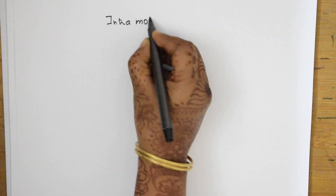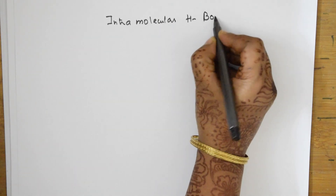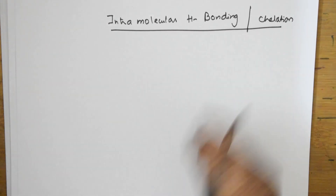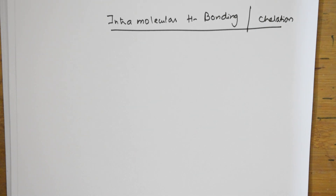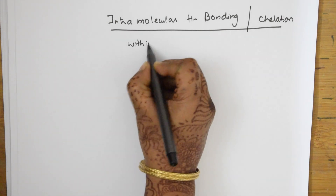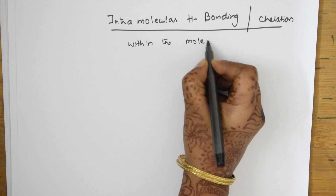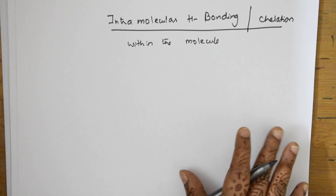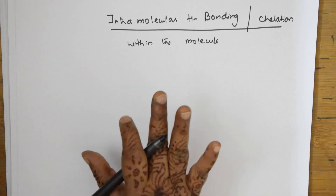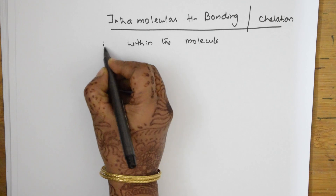Now let us look at intramolecular hydrogen bonding. Intramolecular H bonding is also called chelation. Chelation means a cyclic ring is formed within the molecule. In this type, hydrogen bonding forms within the same molecule — between the electronegative atom and hydrogen atom inside the molecule — and a six-membered cyclic ring is formed.